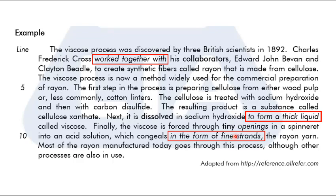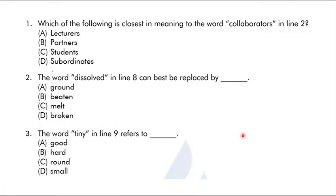Now let's check the answer options. For 'collaborators,' the answer is partners — people you work together with. For 'dissolve,' the substance changes into a liquid, so the answer is melt. For 'tiny,' the key clue was fine strands — small and thin — so the answer is small.